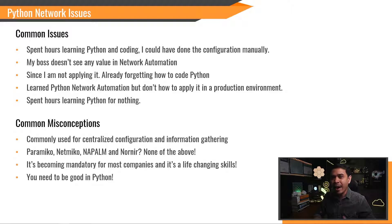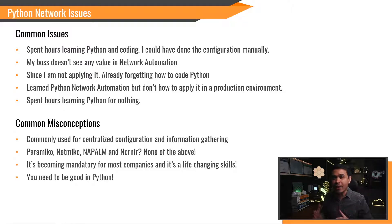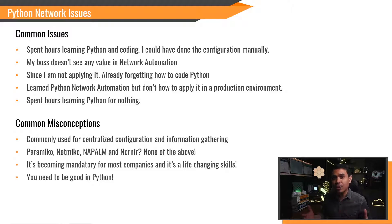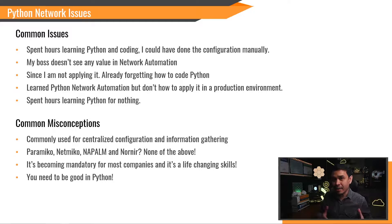I ask my students from CCNA and CCNP classes: why do we need Python network programmability and automation? Most answer: to centralize configuration and information gathering. And I always ask them back — do you think it's worth the learning and shifting to Python network automation based on your current environment? And are there any other options besides Python scripting? I would say it still depends, and we'll talk about this more later.